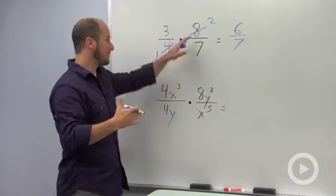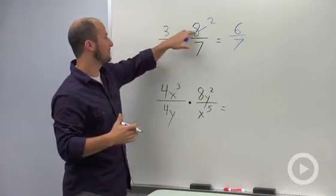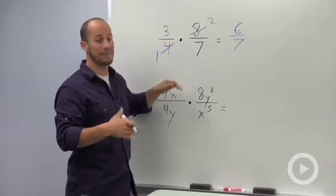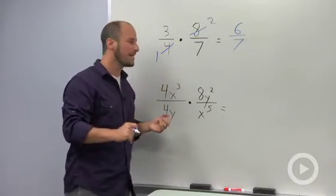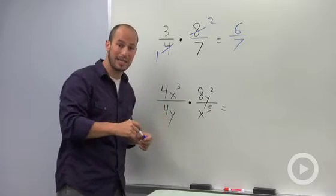We didn't have to simplify this. We could end up getting 3 times 8, 24 over 4 times 7, 28, and then simplify it, but in general, if we can simplify it beforehand, life becomes a lot easier.